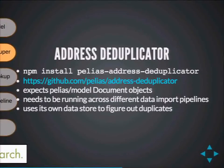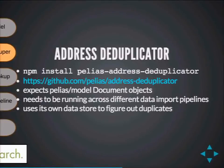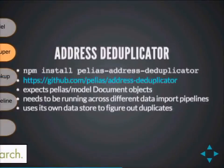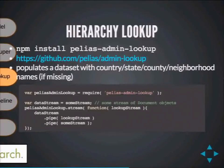Then there's the address deduplicator — a big one. If you use more than one dataset, which we often do — like OpenStreetMap and GeoNames — you'll frequently run into duplicates. Yankee Stadium, for instance, appears in both OSM and GeoNames. You can't have multiple different documents for the same point. This module consolidates duplicates and adds additional information from other sources as metadata into the original document, so all alternate names go into one document and you can search on any of them.